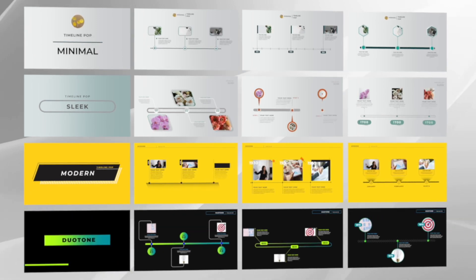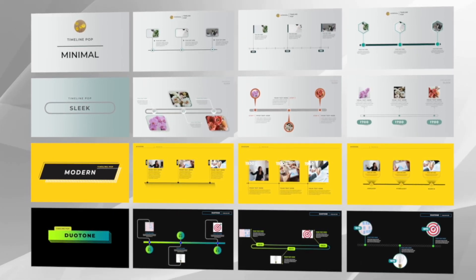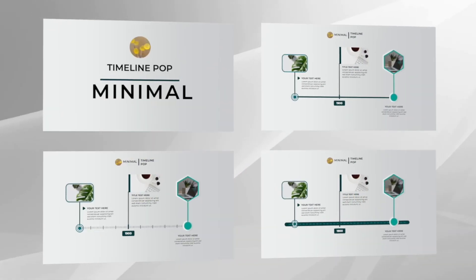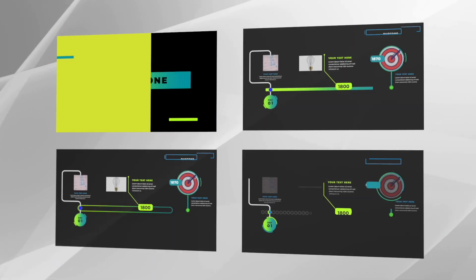Reason number 6, Timeline Pop comes with 28 lines, nodes, and titles in 4 different themes. There's minimal, sleek, modern, and duotone.